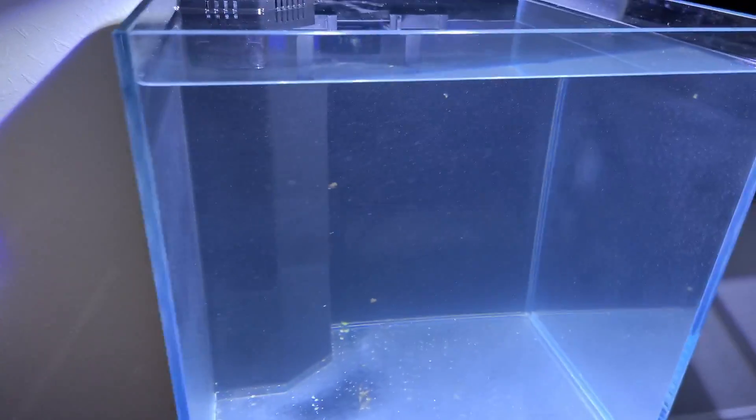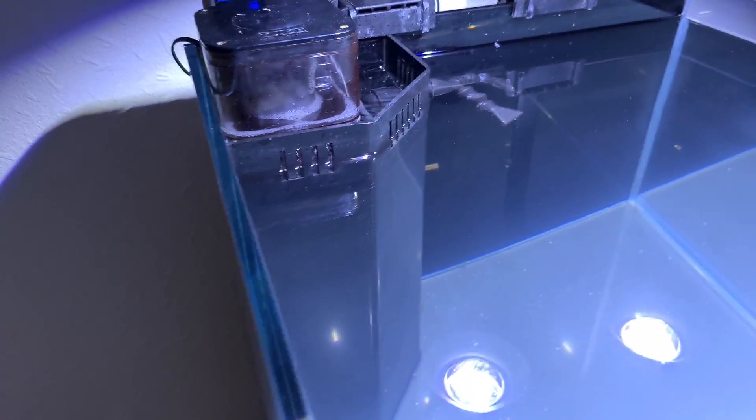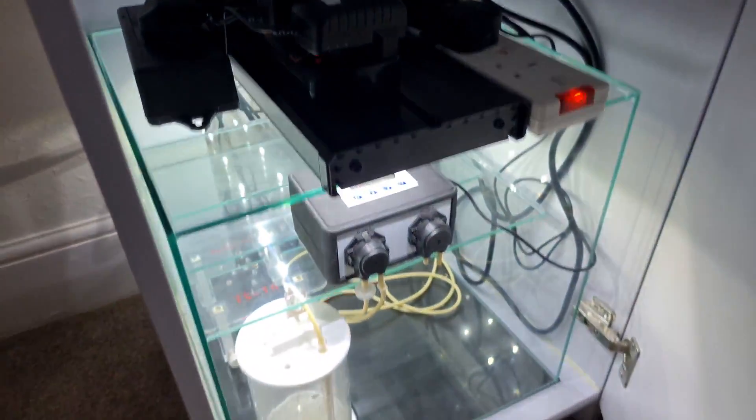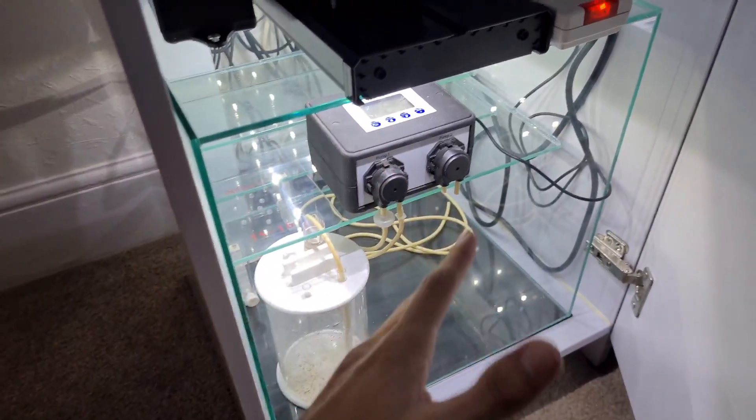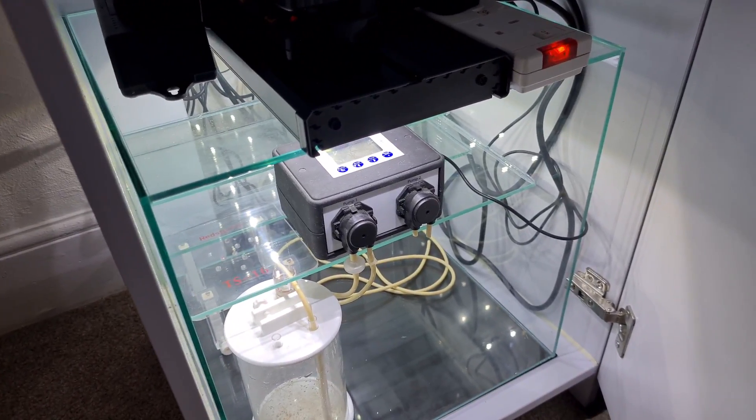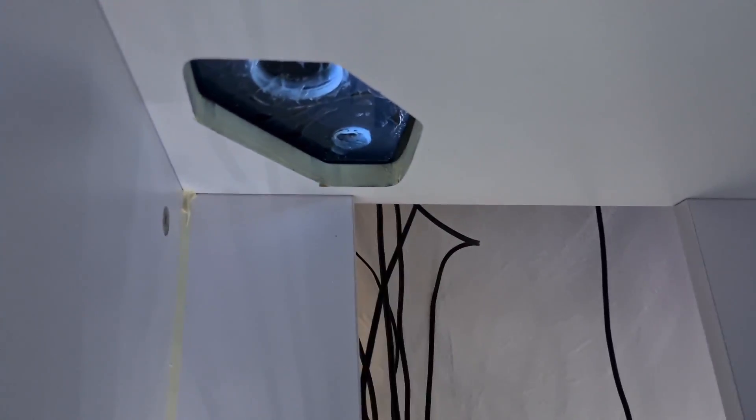So this is a sumped reef tank, so we've got an overflow box in the corner where the pipes would go down and then it would come into a sump down here. This is the sump here, it's obviously the other way around, I'm using it as a shelf right now because this isn't going to be used as a sump. We've actually completely ditched all this, we've siliconed the holes up there so they're completely watertight.